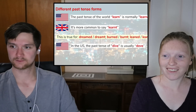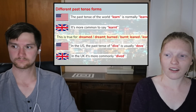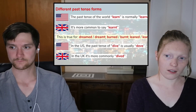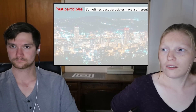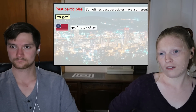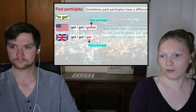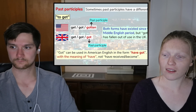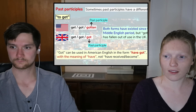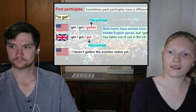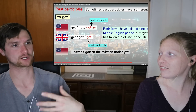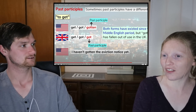Past participles sometimes have a different form. The most well-known example is for the verb 'get.' In the US it's get, got, gotten; but in the UK it's get, got, got. Both forms have existed since the Middle English period, but 'gotten' has fallen out of use in the UK. 'Got' can be used in American English in the form 'have got' with the meaning of 'have,' but 'have gotten' means have received or become — 'I haven't gotten the eviction notice yet' versus 'I haven't got the eviction notice yet.' I actually do kind of like that he has a British person saying the other examples as opposed to it just being him being Canadian — so many videos like this have an American talking about British English, but it's just not the same as having an authentic person saying it properly.